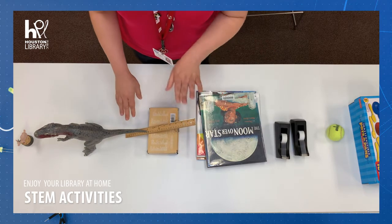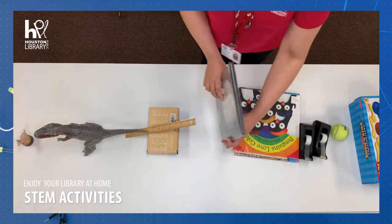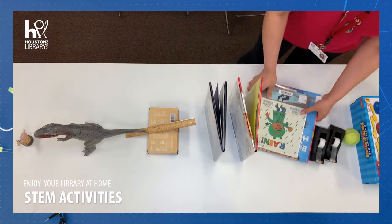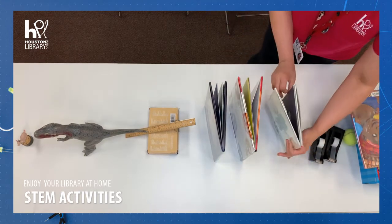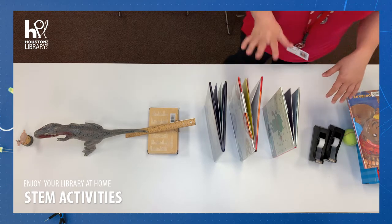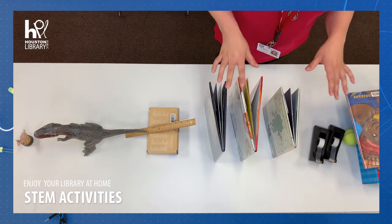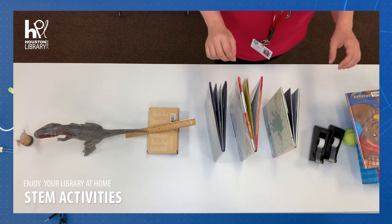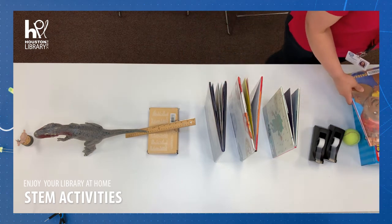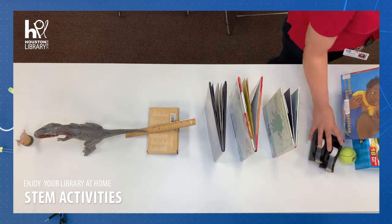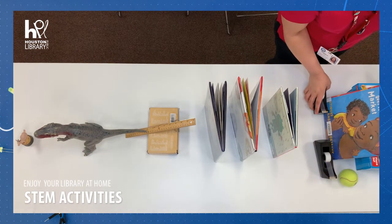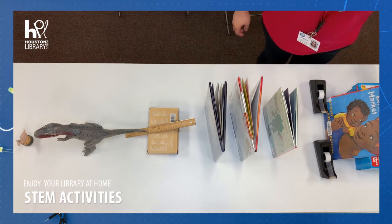We need something to activate our lever, and that is going to be these books falling down. And then we need something to knock over the books. The books are heavy, so they require quite a bit of energy to knock them over. After a lot of different designs and testing, I used another simple machine — an inclined plane — which is our ramp here. This book is acting as our ramp, and the tennis ball is going to roll down it.